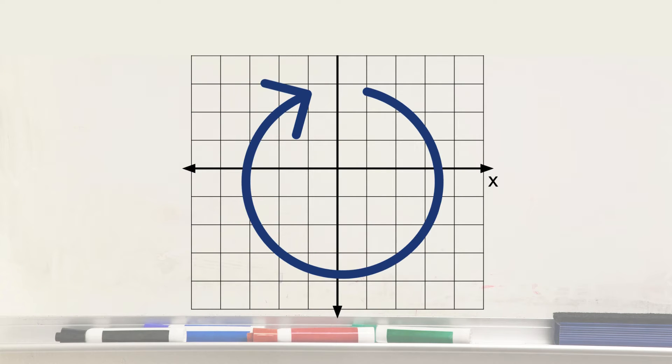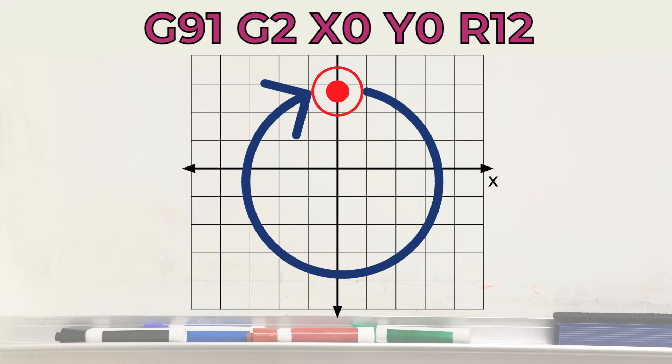When performing a full 360-degree circle, the end coordinate equals the starting position. In such a case, X and Y can be omitted, or set to zero if you are in G91 mode.